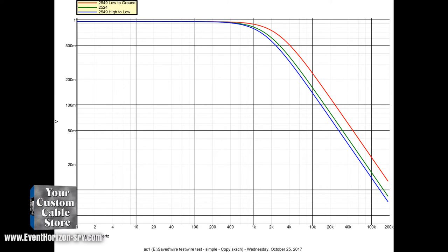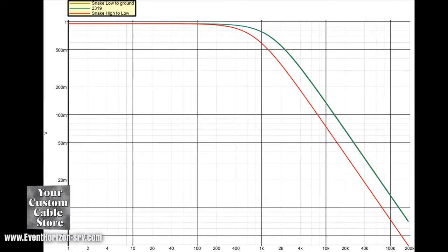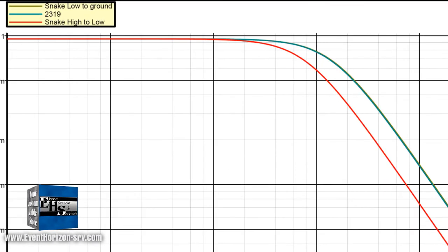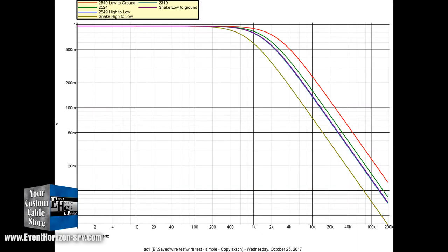In our wire size test, essentially tying the two wires together doubles the wire size, but it does not perform better. Same test with 2319 and Mogami snake wire. In this case, the snake wire with low tied to ground and 2319 perform almost identically with the green and brown lines.